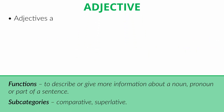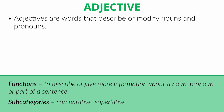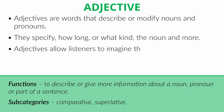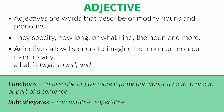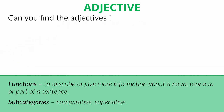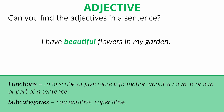Adjective. Adjectives are words that describe or modify nouns and pronouns. They specify how long or what kind the noun and more. Adjectives allow listeners to imagine the noun or pronoun more clearly. For example, a ball is large, round and colourful. Have you imagined that ball? Can you find the adjectives in a sentence? 'I have beautiful flowers in my garden.' 'Which car is yours? The red one is mine.'